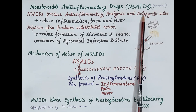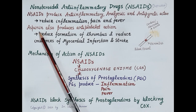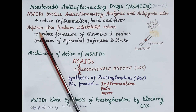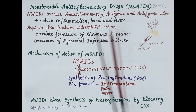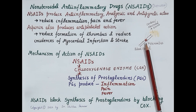One of the oldest NSAIDs is aspirin. In addition to its anti-inflammatory, analgesic, and antipyretic properties, aspirin also produces anti-platelet action. Anti-platelet action means it does not allow platelets to form aggregates, so no platelet plugs are produced, and this prevents the formation of thrombus.